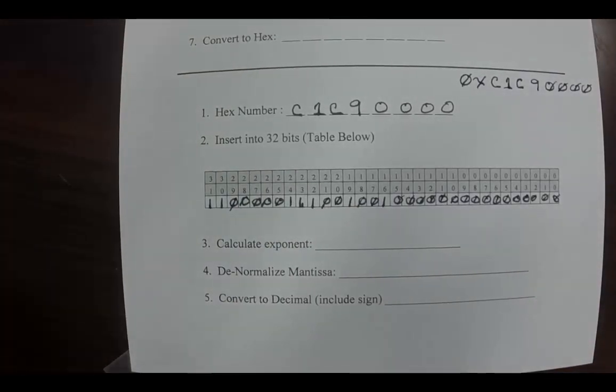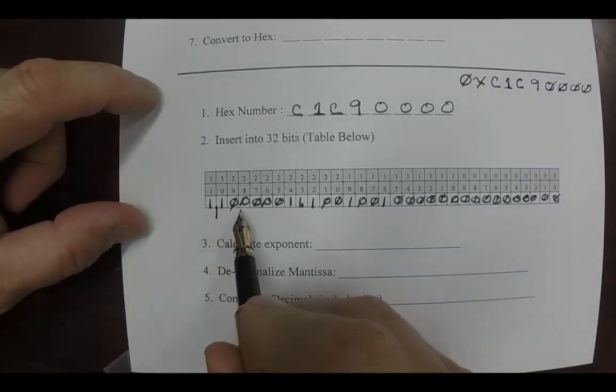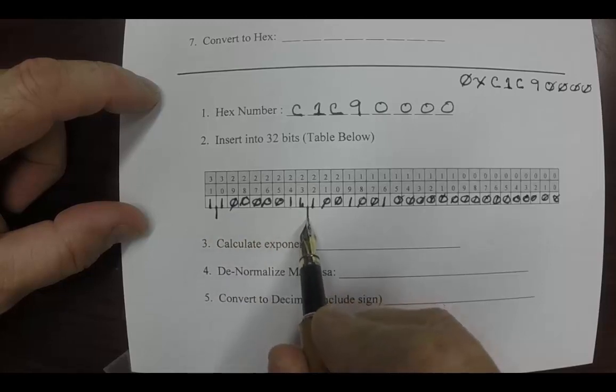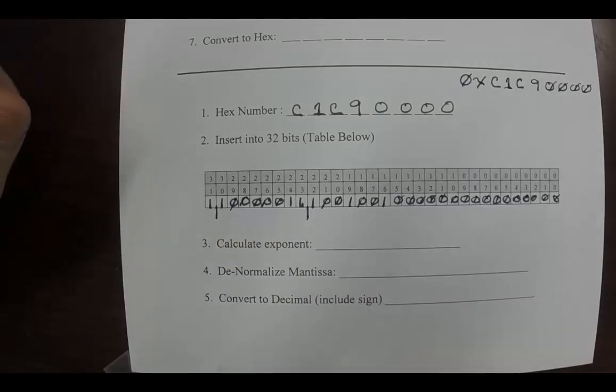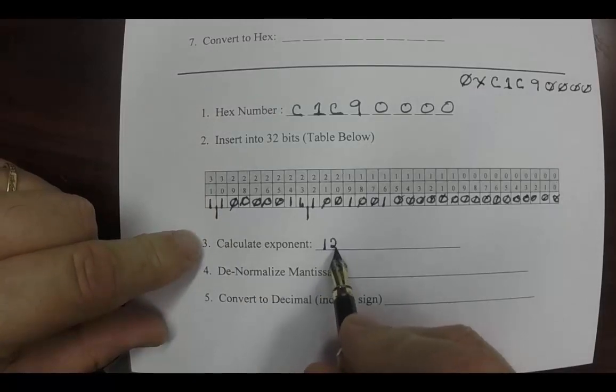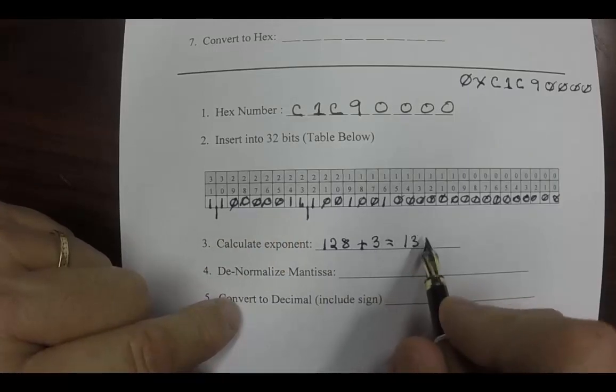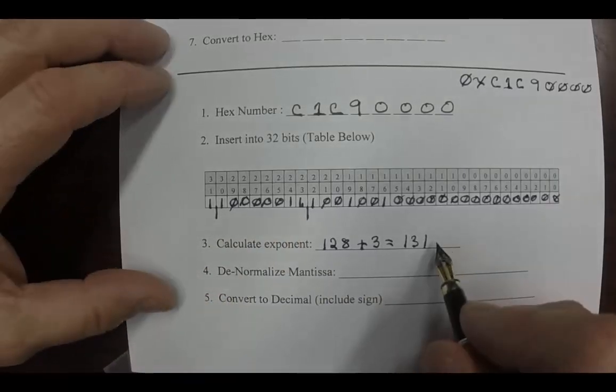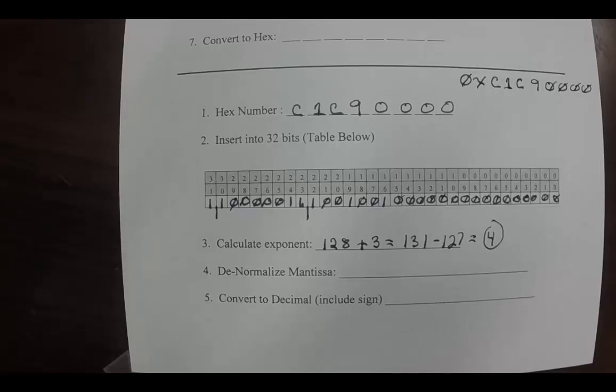Now the next step is to calculate the exponent. The exponent is comprised of these eight bits: 1, 2, 3, 4, 5, 6, 7, 8. So that's 1 followed by 5 zeros and then 1, 1. This one turns out to be that value right there. This 1 right here is 128 plus, and then these two bits over here is 3, so that's 131. Now to get the exponent, we have to subtract 127 from that, so that is 4. So the exponent, we have to move the decimal place four places to the right.